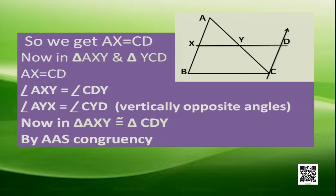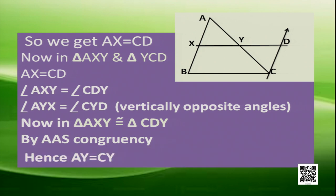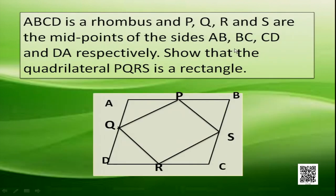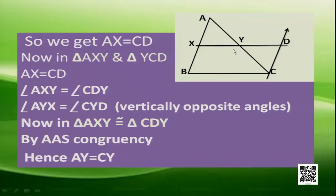Since the two triangles are congruent, we can say that AY equals CY, meaning AC is bisected at Y. That means XY bisects AC.